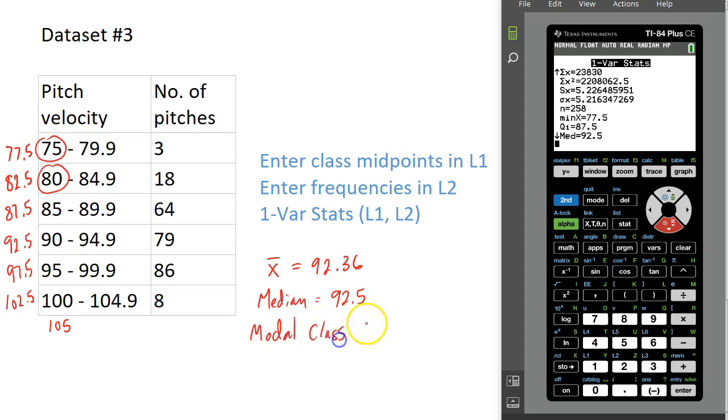But what we can do is define the modal class. The modal class is just the class that had the highest frequency. So in this example, my modal class would be the class from 95 to 99.9 miles per hour. So our average pitch velocity was just over 92, our median pitch was 92.5, and the modal class was pitches between 95 and 99.9 miles per hour.